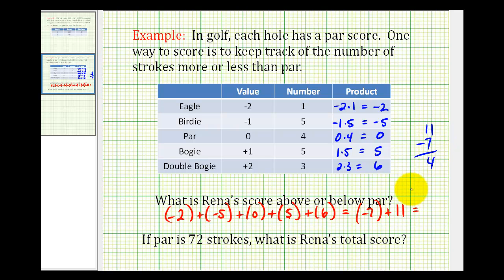And because the positive number outweighs the negative number, we know the result is positive four, which means Rena scored four strokes above par. And in golf, to emphasize that this is actually four strokes above par, sometimes the score will be written as plus four to emphasize that it's a positive four or four strokes above par.